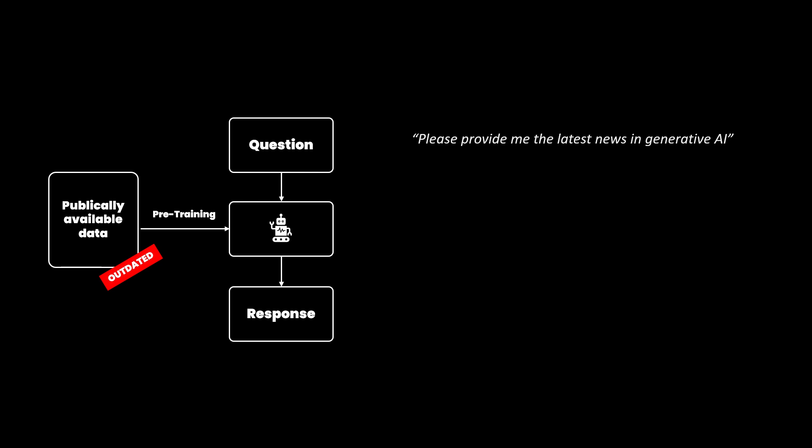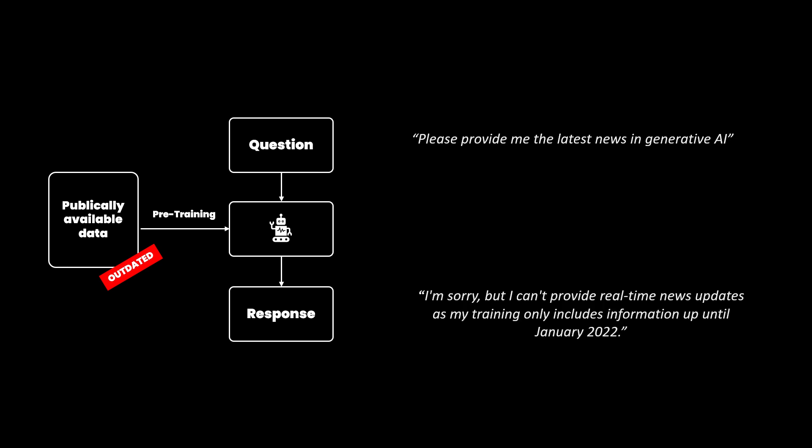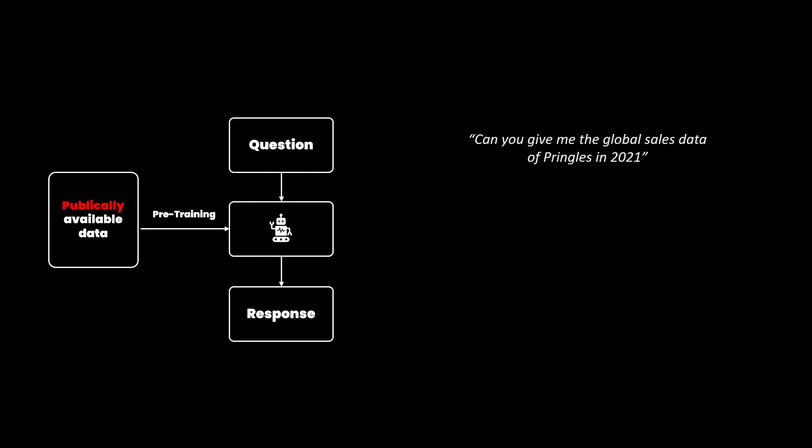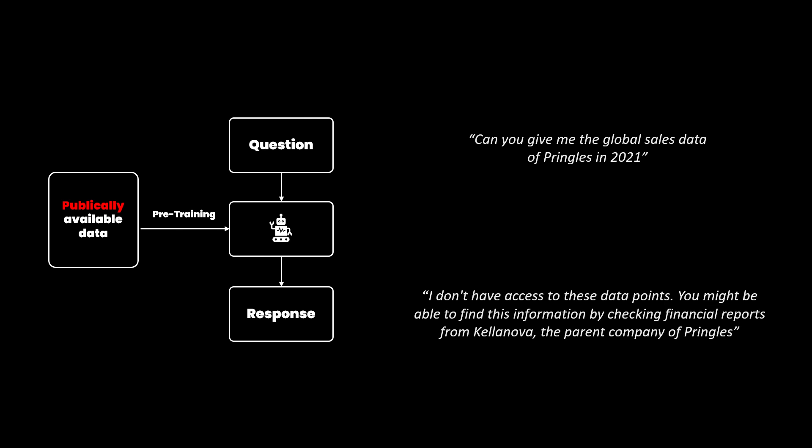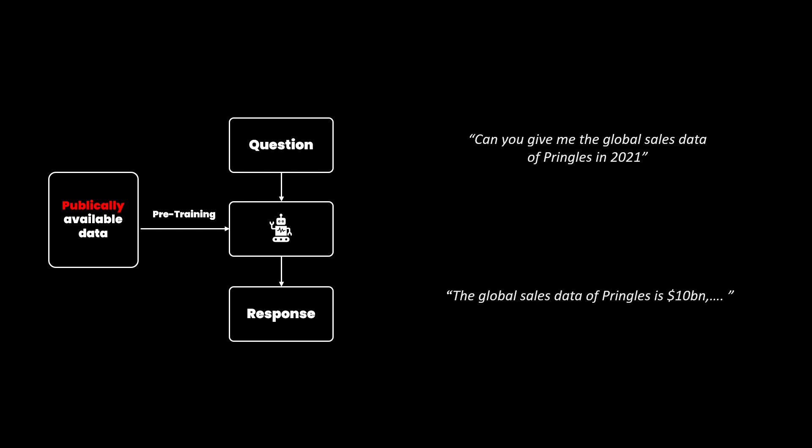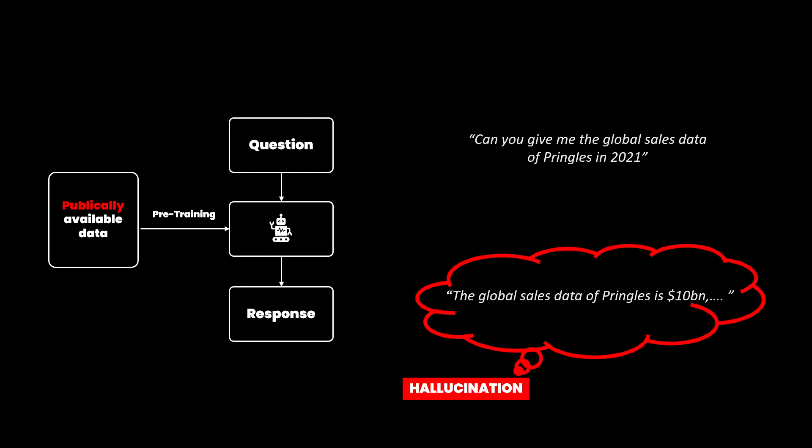If I would share the following prompt with a large language model without RAG capabilities, its response would look something like this: 'I'm sorry, but I can't provide real-time news updates as my training only includes information up until January 2022.' Or, if I would ask it something like this, it would probably give me an answer like: 'I don't have access to these data points. You might be able to find this information by checking financial reports from Kelanova, the parent company of Pringles.' Or worse, start making something up like, 'the global sales data of Pringles is 10 billion.' This is what we call hallucinating.